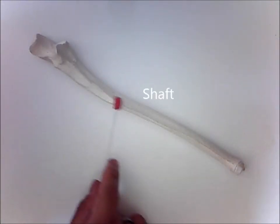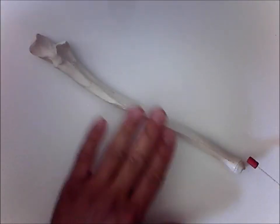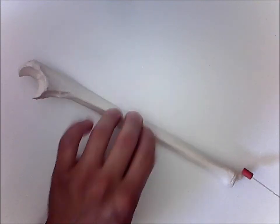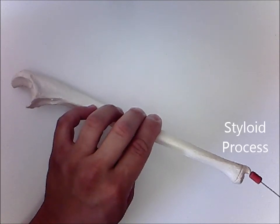You have the shaft of the ulna, the head of the ulna, and on the head of the ulna, this little piece of bone that sticks out is called the styloid process.